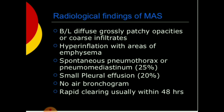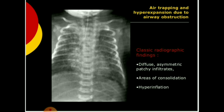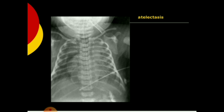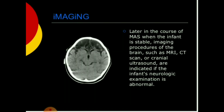Chest X-ray findings include: bilateral diffuse, grossly patchy opacities or coarse infiltrates; hyperinflation with areas of emphysema; spontaneous pneumothorax or pneumomediastinum in 25 percent of cases; small pleural effusion in 20 percent; no air bronchogram; rapid clearing usually within 48 hours. Diffuse asymmetric patchy infiltrates, consolidation, and hyperinflation may also be seen.